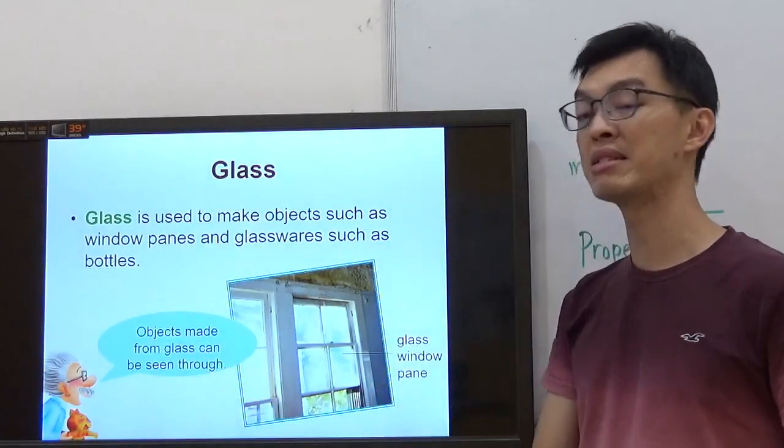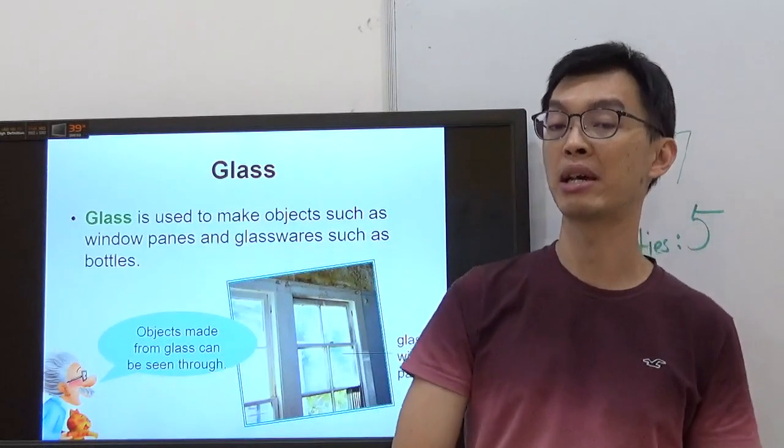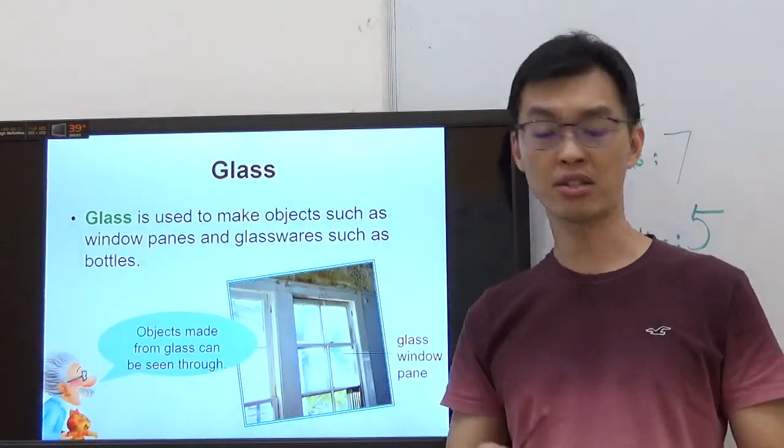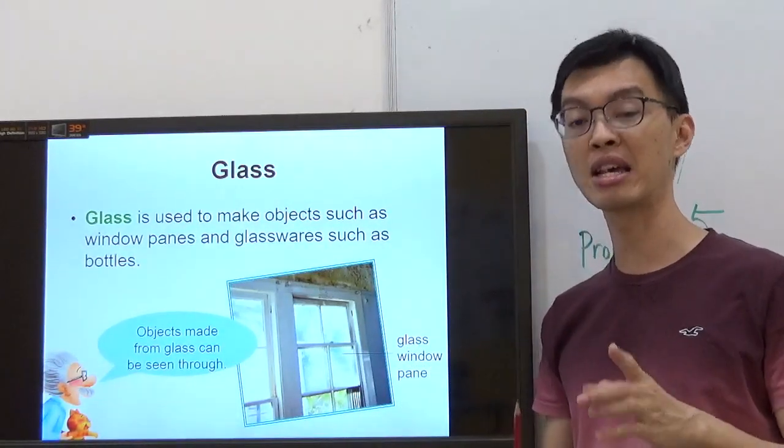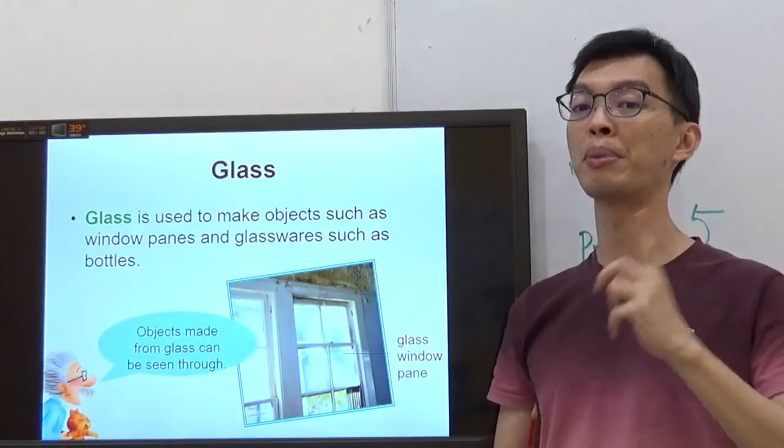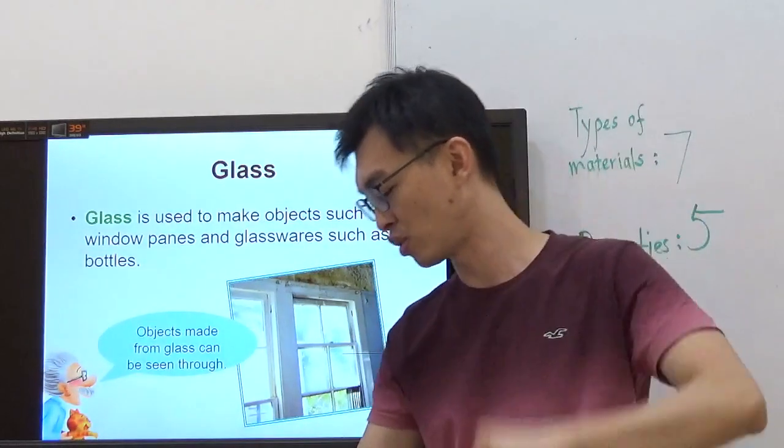Objects made from glass can be seen through. What are they trying to say? There are certain glass that you can see through them, but of course, not every single type of glass. Later, we're going to talk about the properties of glass. Later. Don't worry.